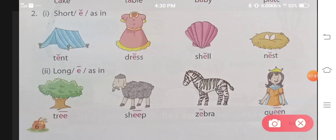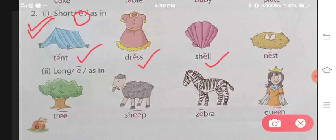Then the same will apply to your second part, that is E. We will see the sound of E. First we will talk about short sounds. Tent. Tent. Dress. Dress. Shell. Shell. Nest. Nest. In all these four words, the E sound that came is very short.